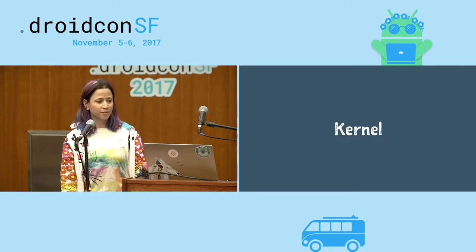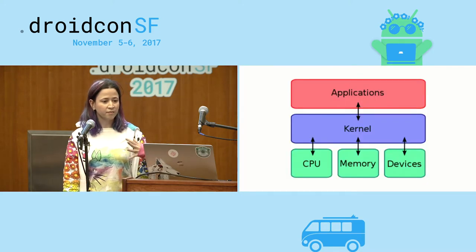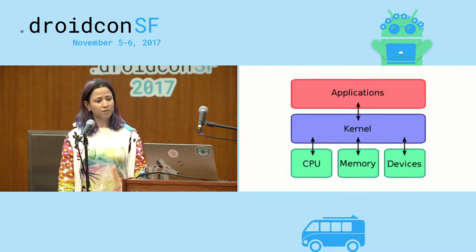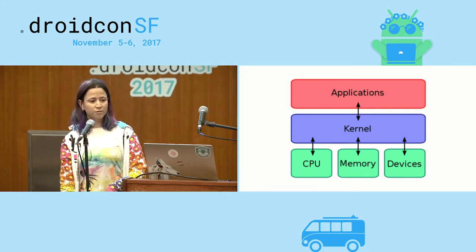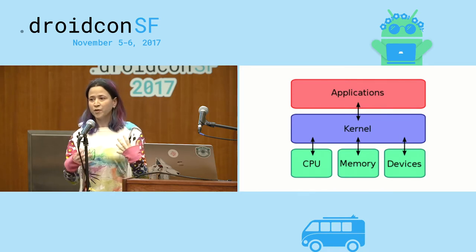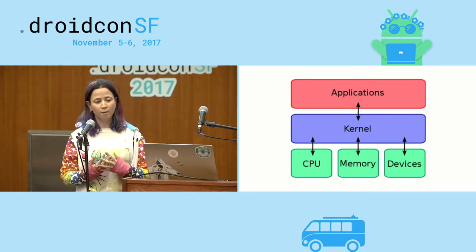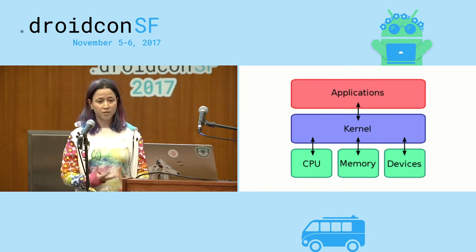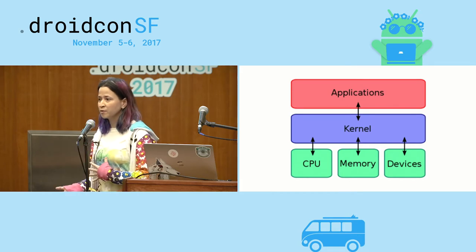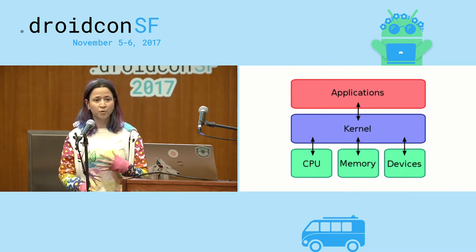Starting from the bottom: the kernel is a computer program that is the core of the operating system. It has complete control over everything in the system and is the first program loaded on startup. It manages our CPUs, memory, and devices — things like which processes get what CPU time, allocating memory, accessing devices like hard drives and keyboards.